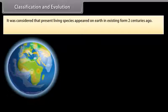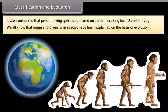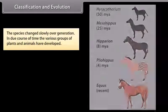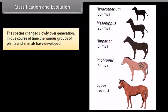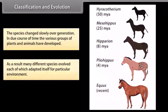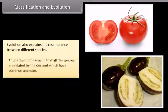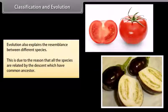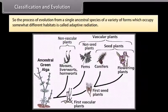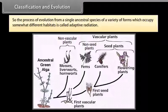Regarding classification and evolution: it was considered that present living species appeared on earth in existing form two centuries ago. We all know that origin and diversity in species have been explained on the basis of evolution. Species changed slowly over generations, and in due course of time various groups of plants and animals have developed. As a result, many different species evolved, each of which adapted itself to a particular environment. Evolution also explains the resemblance between different species, as all these species are related by descent and have a common ancestor. This process — evolution from a single ancestral species to a variety of forms occupying different habitats — is called adaptive radiation.